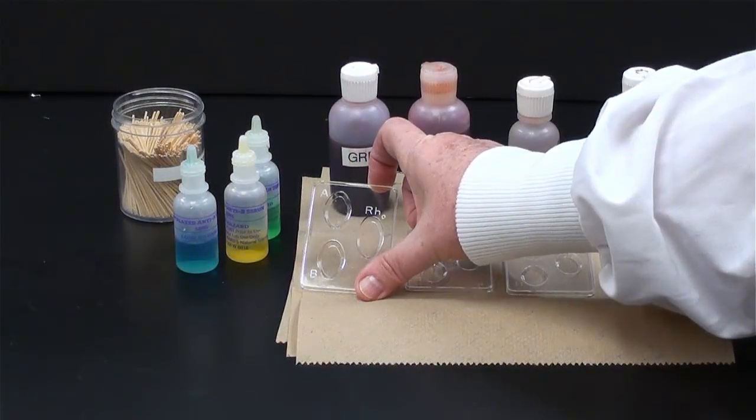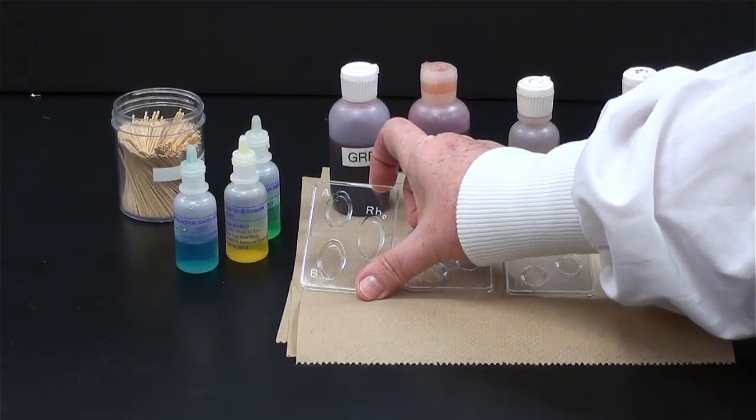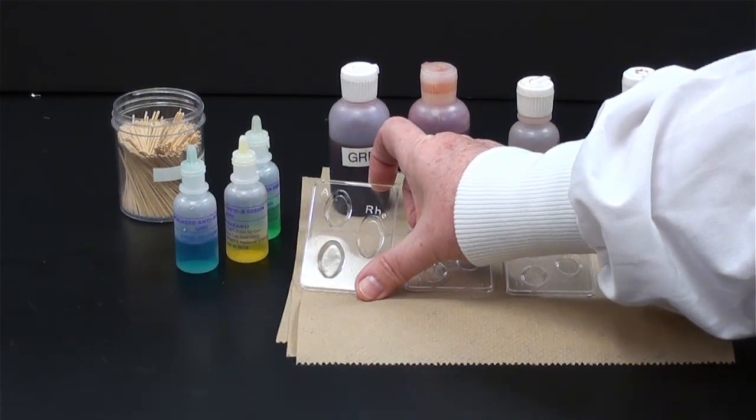Each of these little trays has three depressions or wells, one marked A, one marked B, one marked RH.